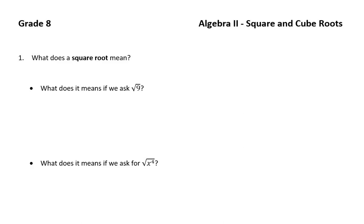So first of all, what does a square root mean? I would write a heading in your book that says 'square and cube roots,' and write down all the notes that we're making with all of our examples. Just make sure you pause the video when you need time to catch up. You've probably seen the symbol before — it looks like that. Technically there's an invisible 2 there, because that's what it means to have a square root.